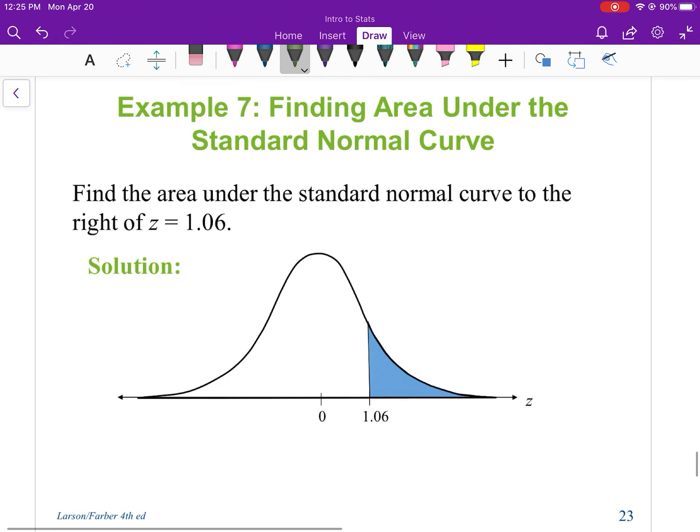For this one going to the right, the first thing I'm going to do is look up this 1.06 in my table. Let's see, let's just find that area in the table, 0.8554. That's the left side. So if I want to get the right side, I'm going to subtract it from 1. So it's basically its complement.